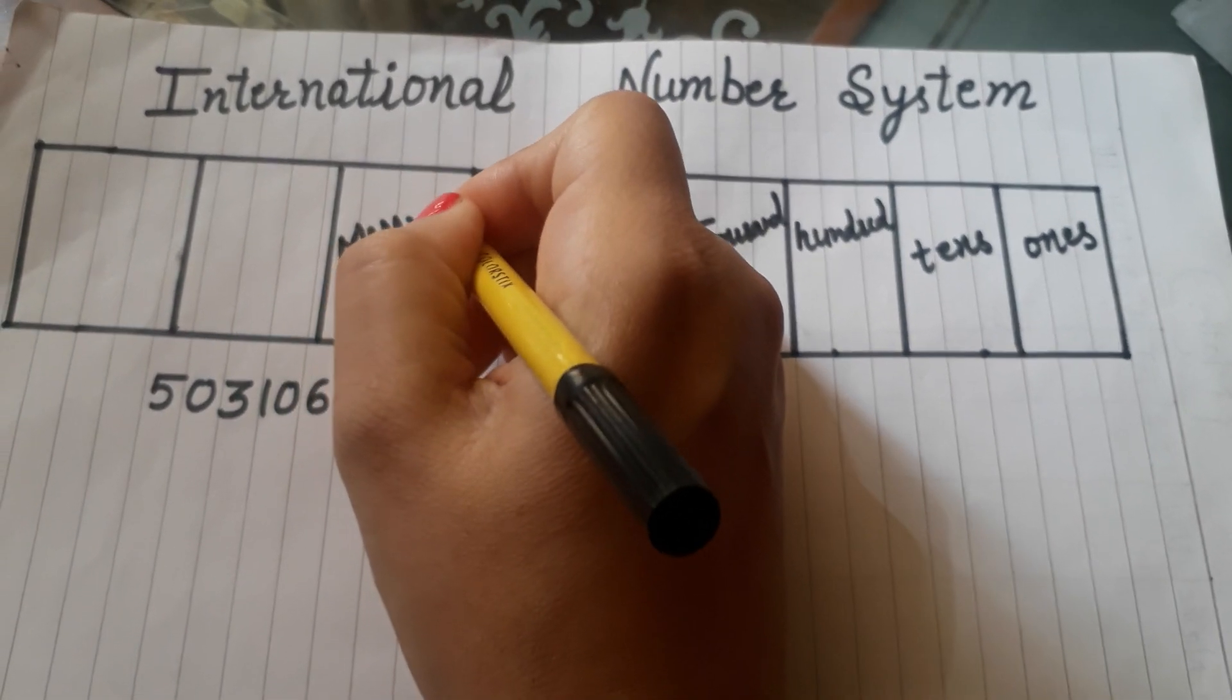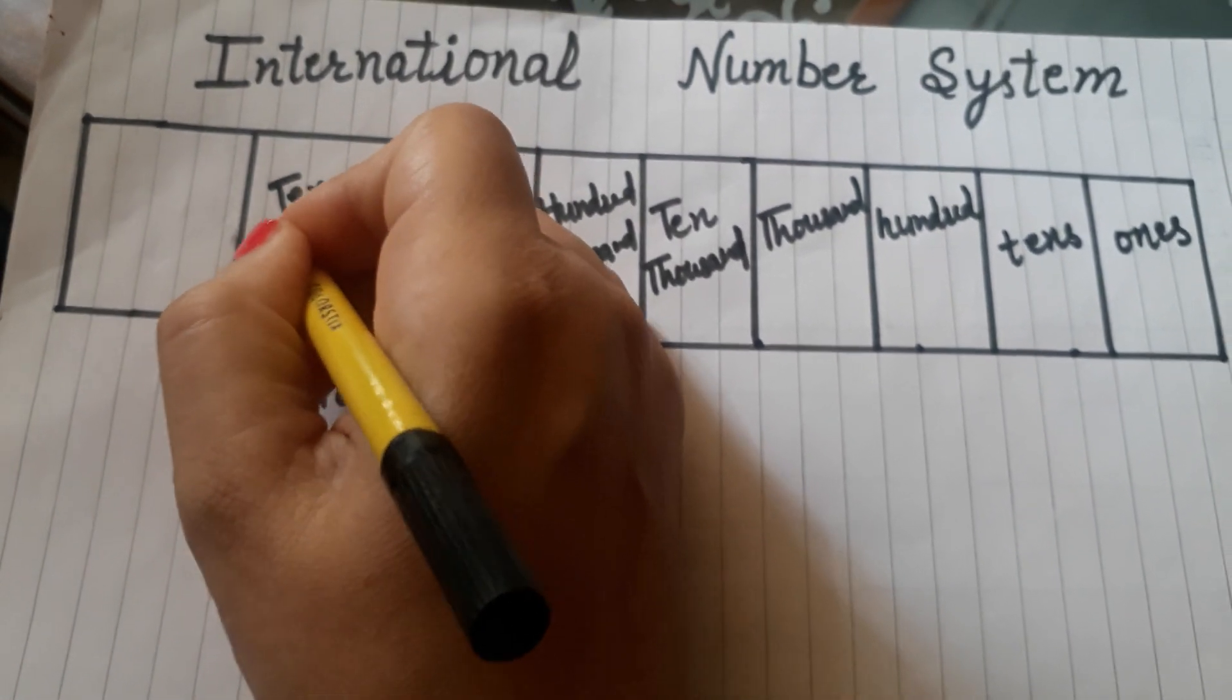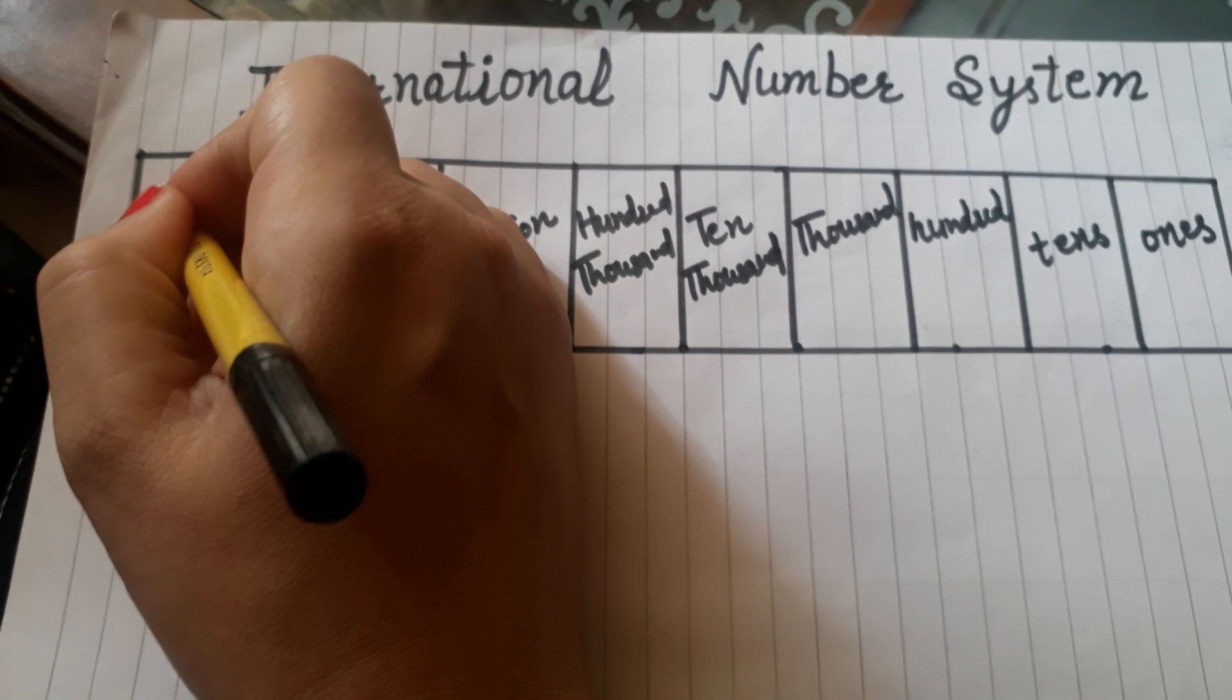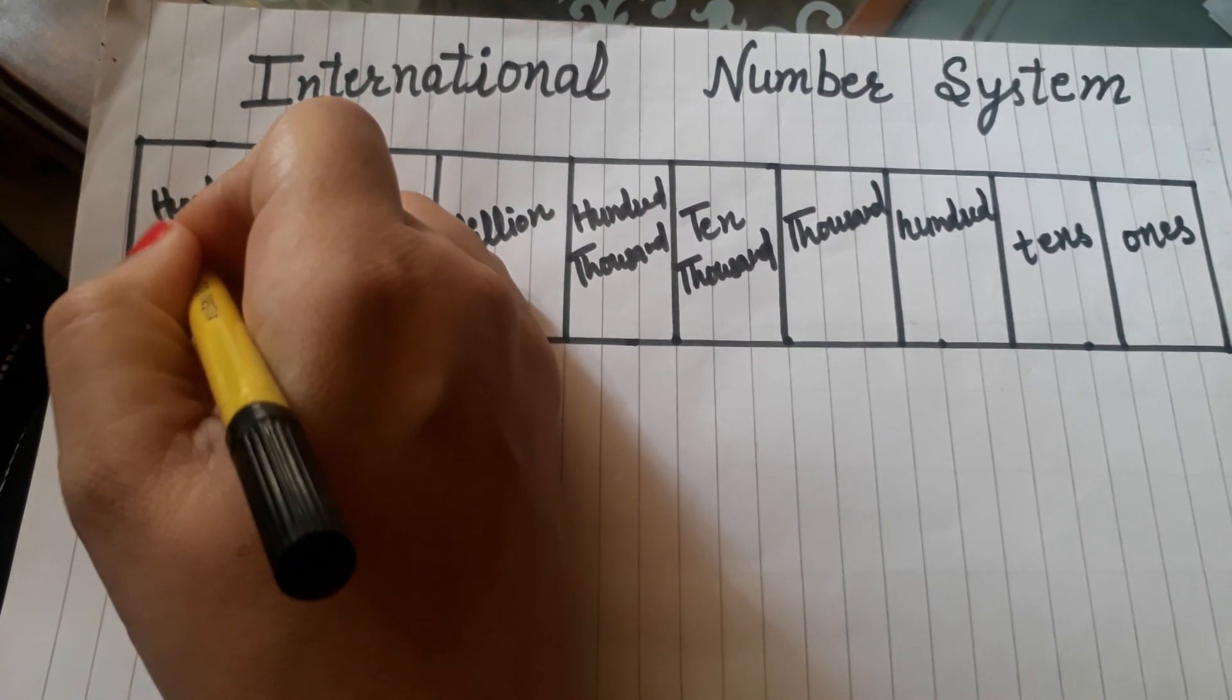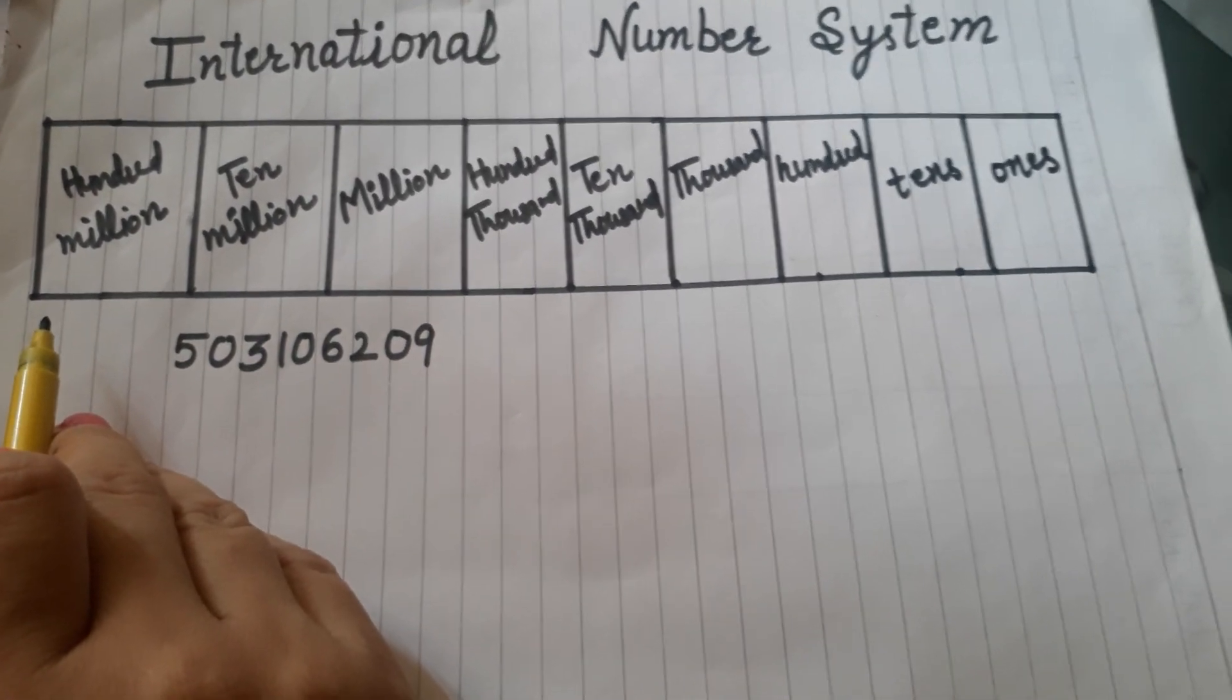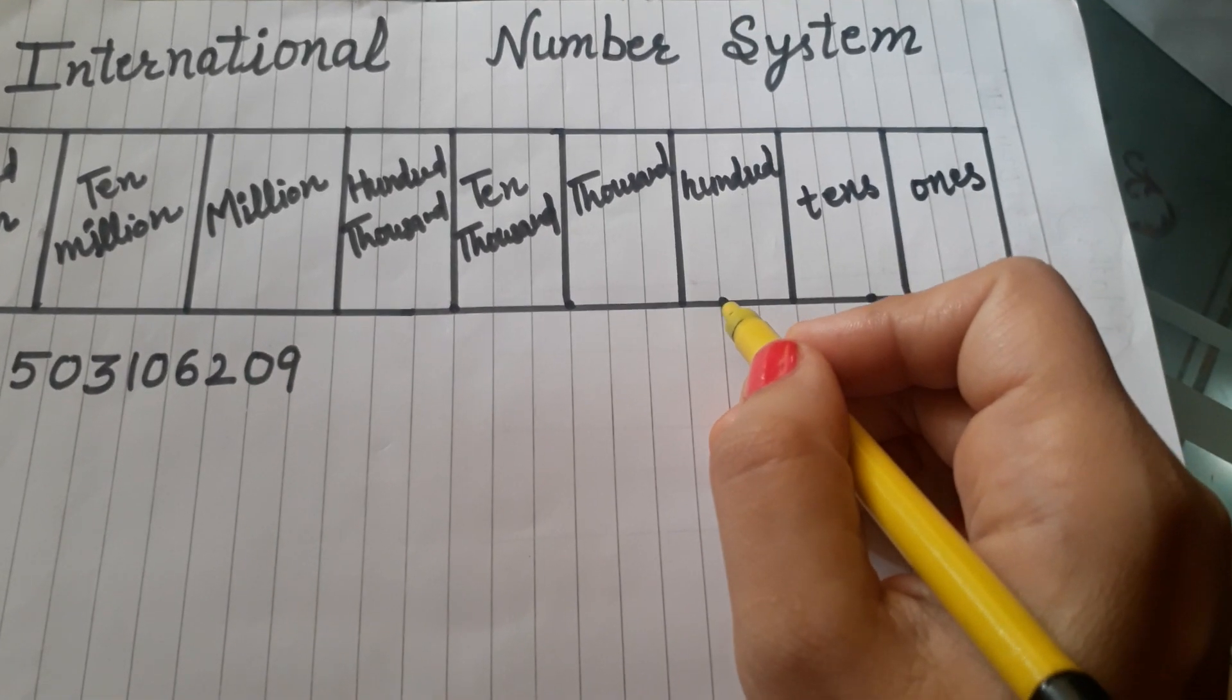Then ten million and hundred million. So there are 9 places in this way. In this we have 3 families.